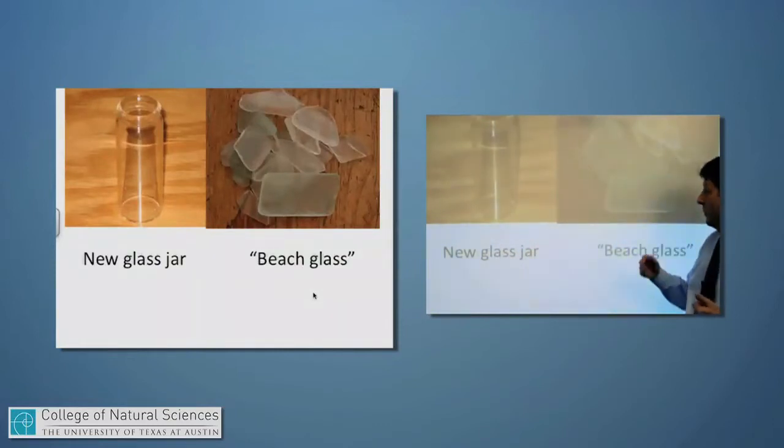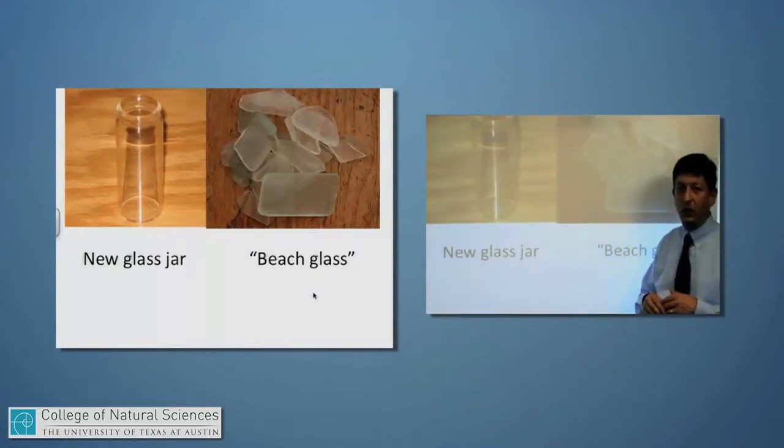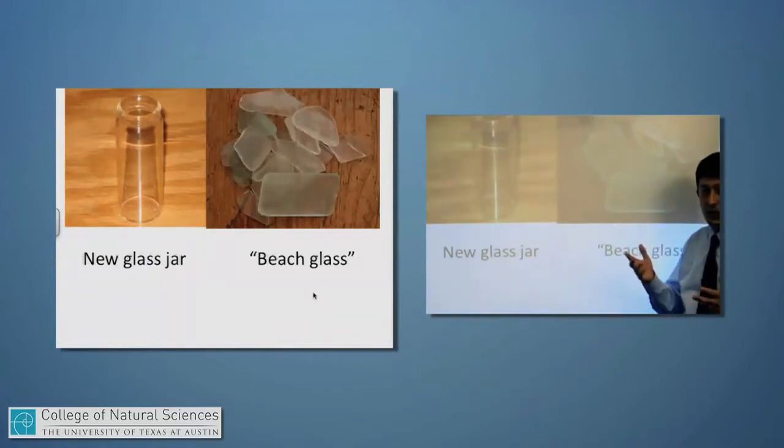But you've also seen perhaps glass at the beach, some piece of bottle that's been smashed up on the ocean beach, and it's been pummeled around and scratched up over and over again as the waves bring it up against the beach. That's sometimes called beach glass and people make jewelry out of it.